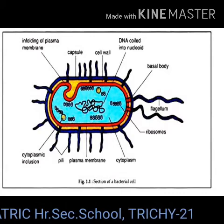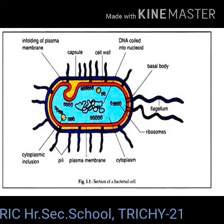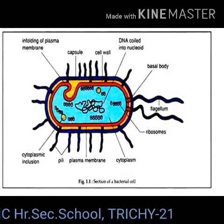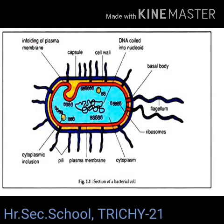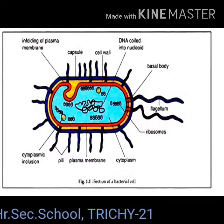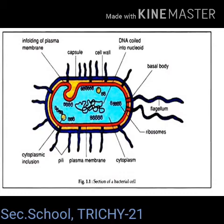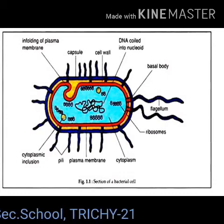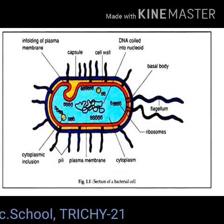Plasmids are extra-chromosomal double-stranded circular self-replicating independent elements. They contain genes for fertility, antibiotic resistance, and heavy metals. They also help in the production of bacteriocins and toxins, which are not found in the bacterial chromosome.